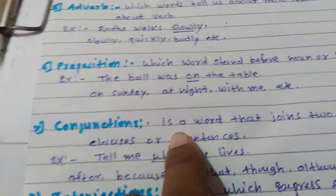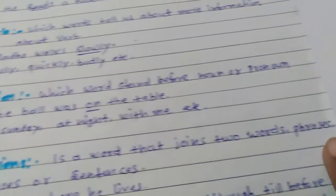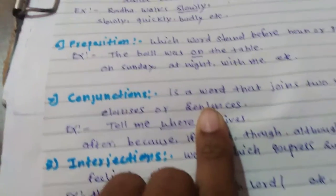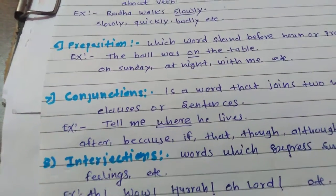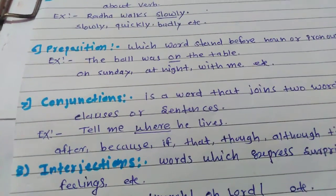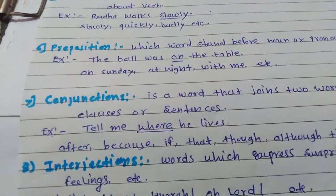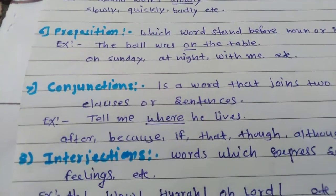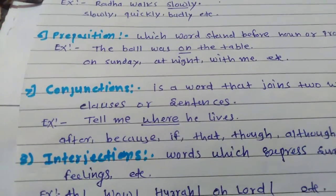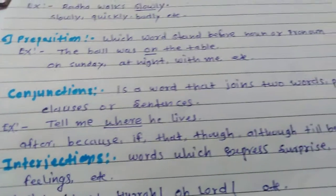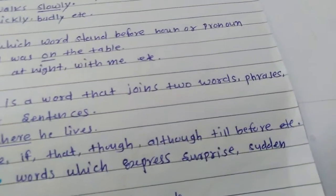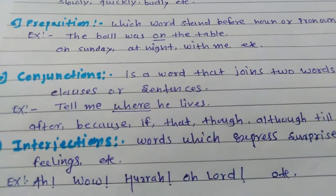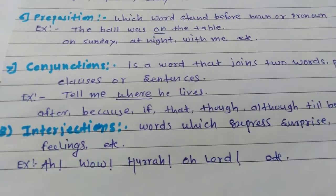Next is conjunction. It is a word that joins two words, phrases, clauses, or sentences — that is called as the conjunction. Conjunction plays a very important role in joining two sentences, words, phrases, or clauses. For example: 'Tell me where he lives' — here 'where' is the conjunction. Others include: after, because, if, that, though, although, till, before, etc. Many conjunctions are used in our writing as well as in our speaking.